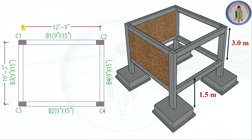Consider this rectangular slab of 12 feet 9 inches by 10 feet 3 inches, which has 4 columns. Taking a section from ground level, the excavation depth is 1.5 meters. This shows the PCC, footing, column, and the plinth beam. Above the floor level is the roof level, with roof beams and the roof slab.